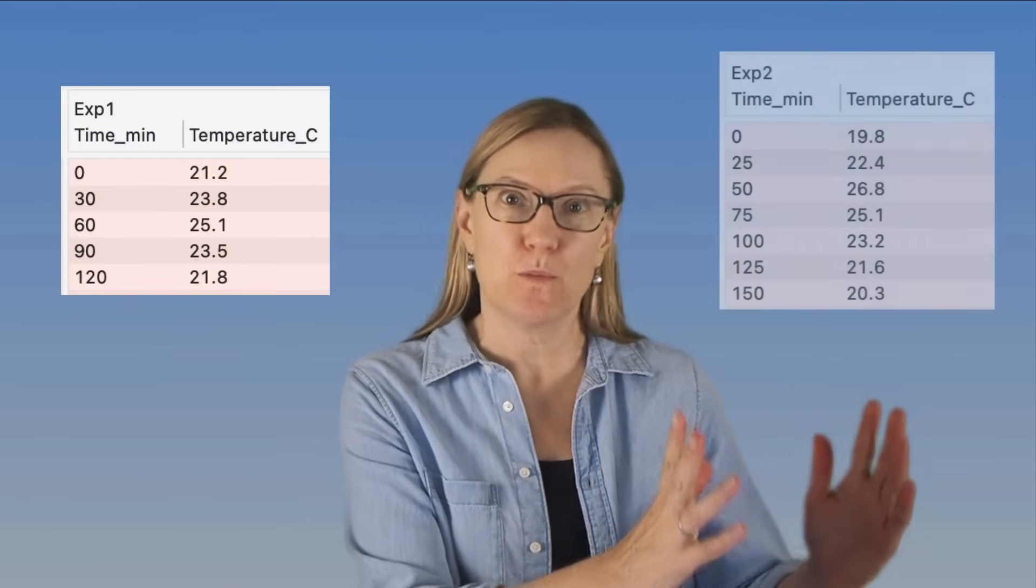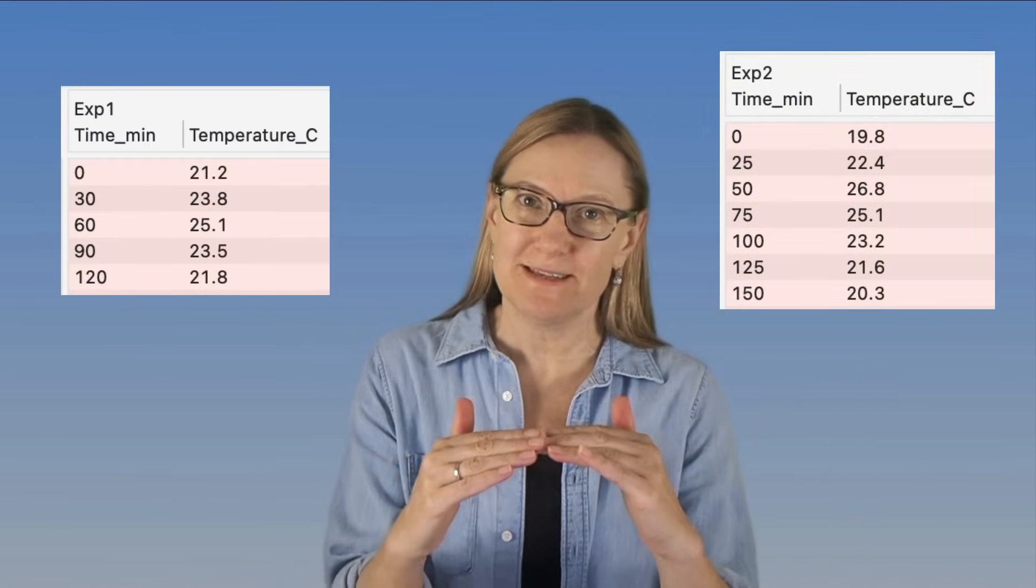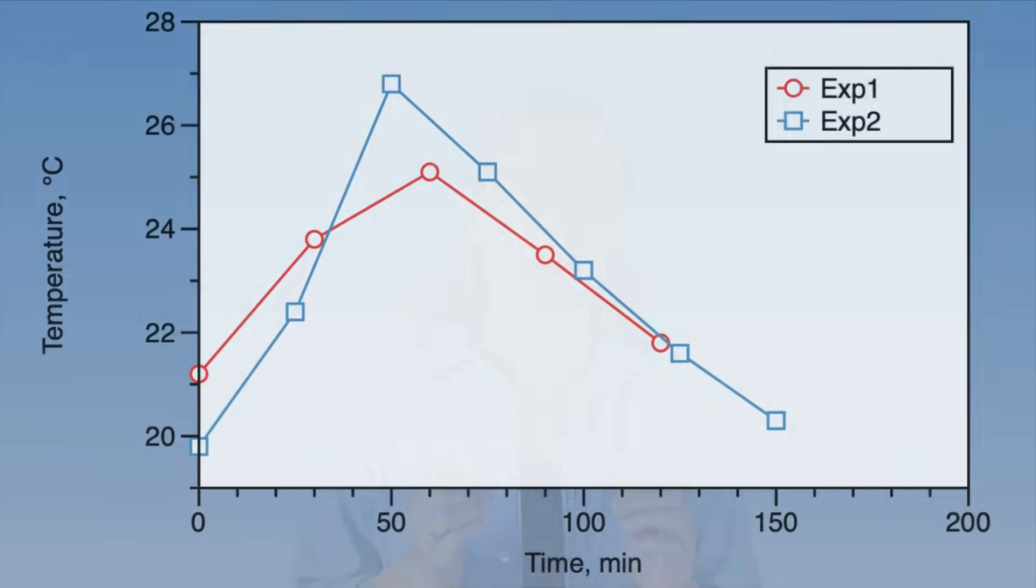A common issue when working with data is that you have different data sets you want to combine. In particular, I'm going to talk about when you have data to plot as line graphs and you have one data set with an X and Y column and another data set with another X and Y column and you want to bring these together. This can be a little bit confusing in a spreadsheet and requires tedious manipulation of your data.